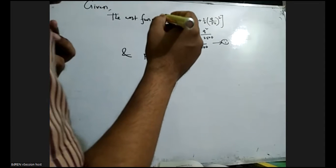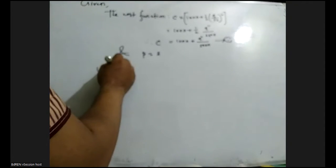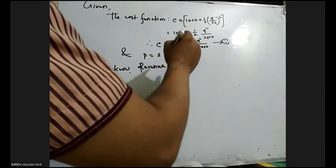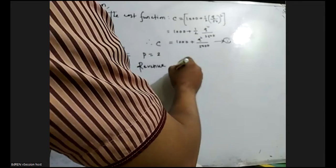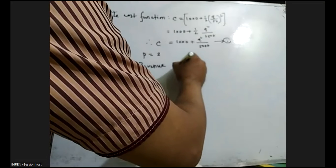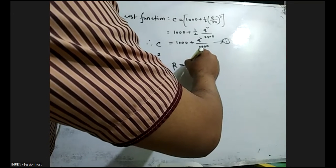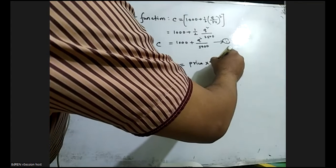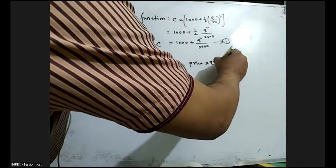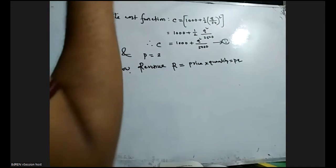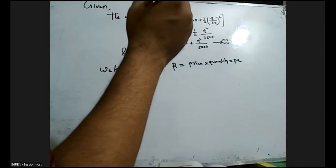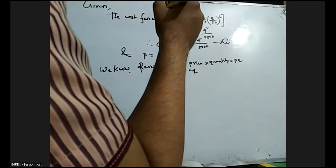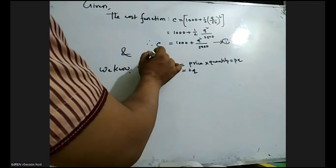We know that revenue R equals price multiplied by quantity, that is R = p × q. Since the price p = 2 is given, we get R = 2q.